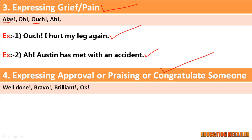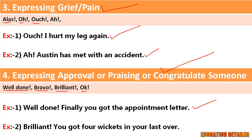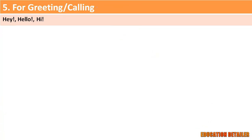Fourth, when we praise or congratulate someone, we use interjections like well done, bravo, brilliant, okay. For example: 'Well done, finally you got the appointment letter!' and 'Brilliant, you got four wickets in your last over!'